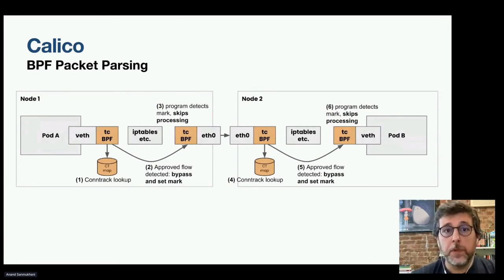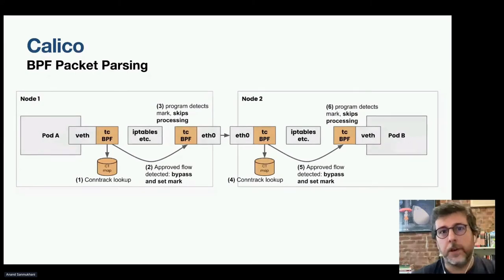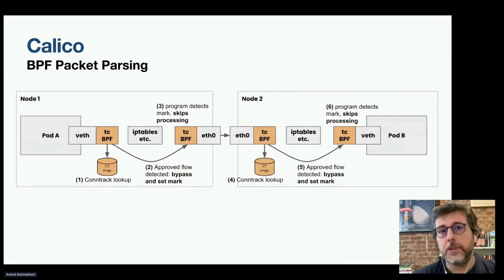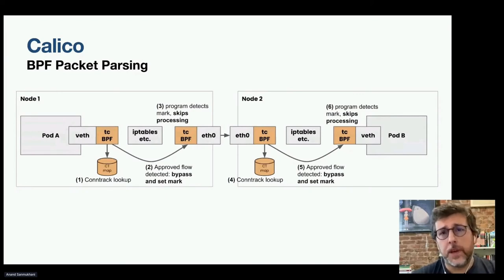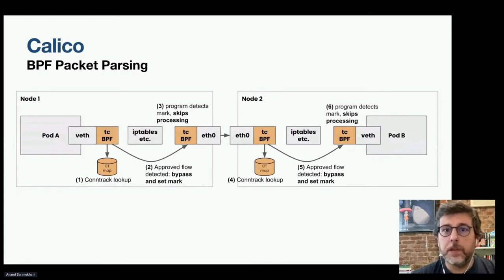Being able to modify packets using BPF also gives us some Kubernetes-specific functionality that we don't get with the standard data plane, such as preserving external client source IP addresses and supporting direct server return for more efficient routing. The logic for this functionality is compiled ahead of time and uses a set of maps to store NAT information — one map for service metadata and a second map for the IP addresses of the backing pods.